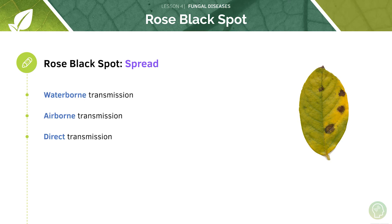Fungal pathogens tend to spread disease via spores that they release from conidia. In the case of rose black spot, there are three methods of spread: waterborne transmission, airborne transmission, or direct leaf-to-leaf transmission.